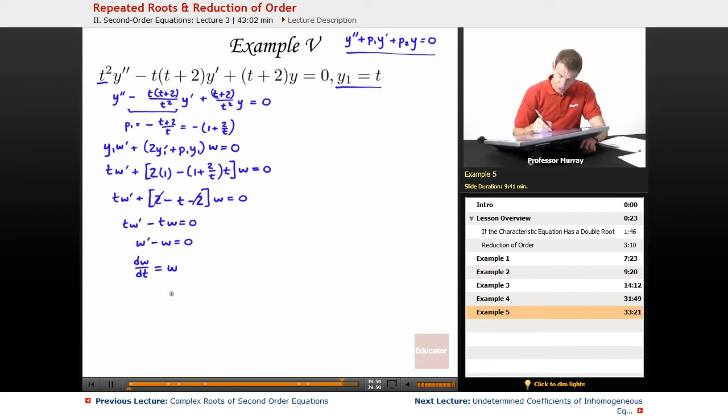If I multiply both sides by dt, I'll get dt on the right. On the left, if I divide by w, dw over w. I separated, got all the t's on one side, all the w's on the other. Take the integral of both sides. Get natural log of w equals the integral of dt, which is just t.